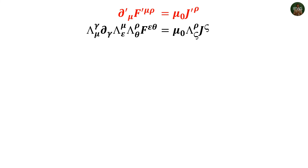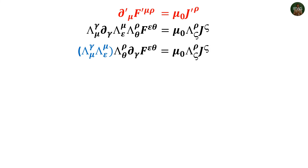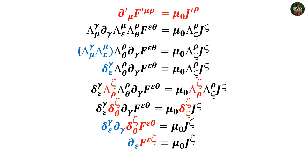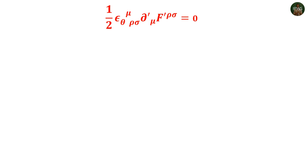Taking the source Maxwell's equation in the transformed frame, del'_mu F'^(mu rho) = mu_0 J'^rho, and inserting transformed forms: Lambda^gamma_mu del_gamma Lambda^mu_epsilon Lambda^rho_theta F^(epsilon theta) = mu_0 Lambda^rho_zeta J^zeta. The two lambdas with common index mu combine to form Kronecker delta delta^gamma_epsilon. Multiplying both sides by the inverse Lambda contracts the remaining lambdas, and letting the deltas be absorbed by the field tensor and current density gives del_epsilon F^(epsilon xi) = mu_0 J^xi — exactly the untransformed Maxwell's equation.